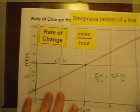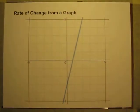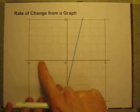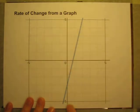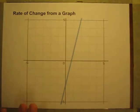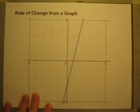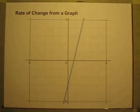If I switch to a different graph like this — I've got another line on a graph, but this time there's no story. I've got values for my x-axis, I've got values on my y-axis, but there's no story — no miles per hour or feet per second or anything like that. But I can still describe the steepness of this line.